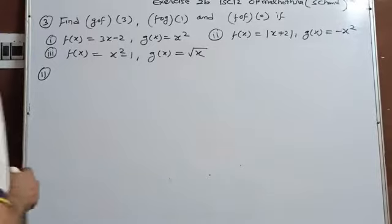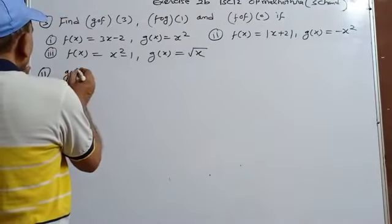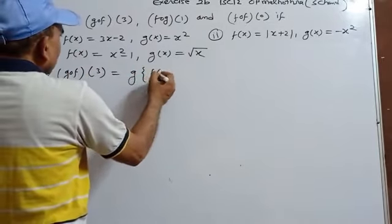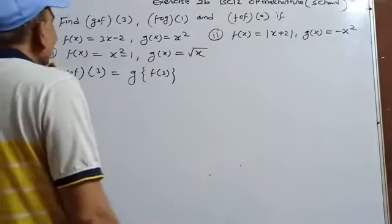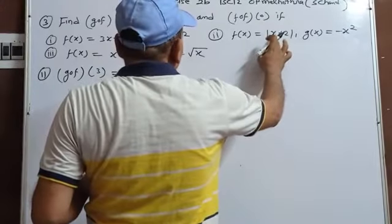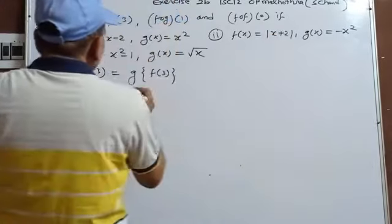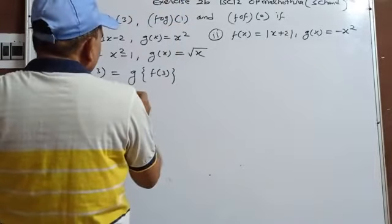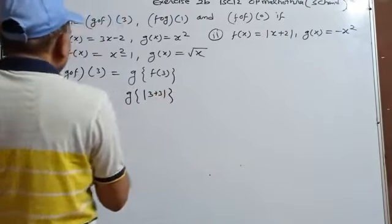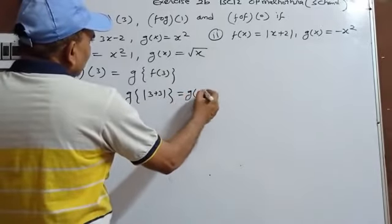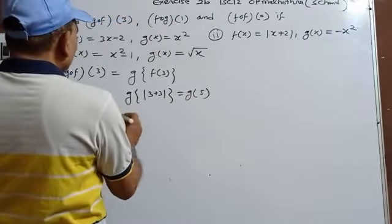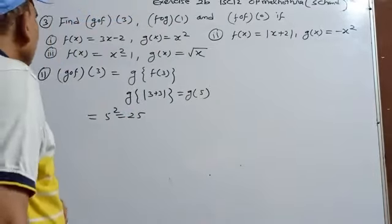For gof(3) in a new question: gof(3)=g(f(3)). f(x)=|x+3|, so f(3)=|3+3|=6. Wait, f(3)=|3+3|=6, not 5. Actually f(3)=modulus of 3+3 which gives g(5). Then g(5)=5²=25.